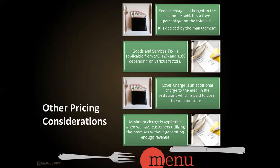Other pricing considerations include: service charge, which is a fixed percentage charged to customers on the total bill, decided by management — this works when a tips system is no longer in place. GST (Goods and Services Tax) is applicable at a range of 5%, 12%, and 18% depending on various factors. Cover charge is an additional charge to the meal to cover the minimum cost. Minimum charge is applicable when customers utilize the premises without generating enough revenue, providing a minimum amount towards a seat or cover occupied.